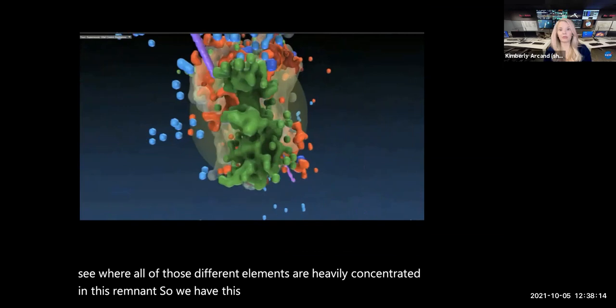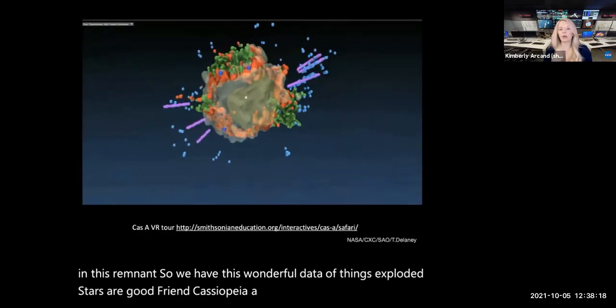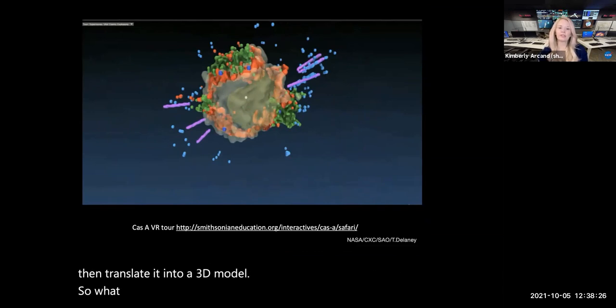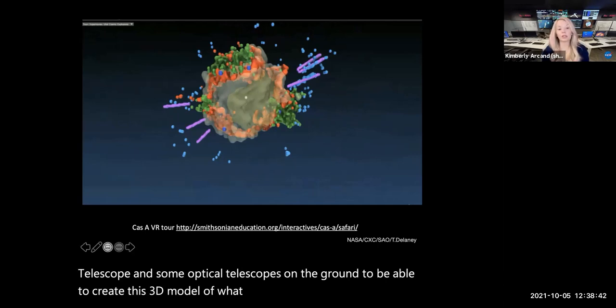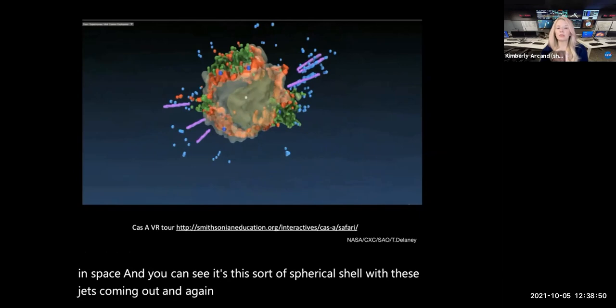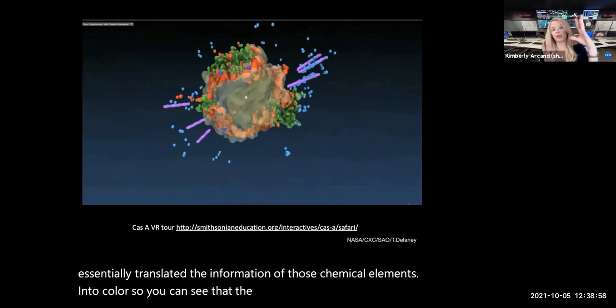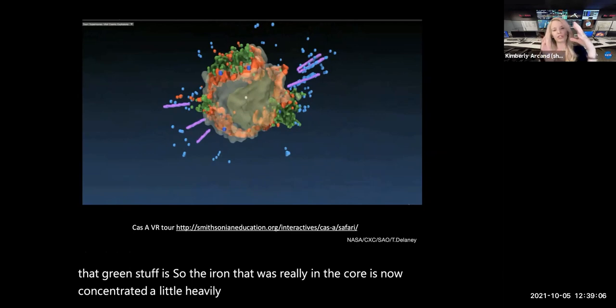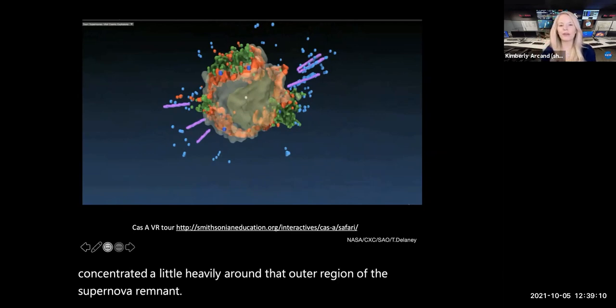So you can see where all of those different elements are heavily concentrated in this remnant. So we have this wonderful data of things like exploded stars, our good friend Cassiopeia A. And by using more software and more coding and more scientific analysis, we can then translate it into a 3D model. So what you're looking at here is the first ever data-driven 3D model. So using all of that information that was captured by the spacecraft and a couple of our friends as well, the Spitzer Space Telescope and some optical telescopes on the ground, to be able to create this 3D model of what that object might actually look like in space. And you can see it's this sort of spherical shell with these jets coming out. And again, the color is important because we've essentially translated the information of those chemical elements into color. So you can see that the iron, for example, is where all of that green stuff is. So the iron that was really in the core is now concentrated a little heavily around that outer region of the supernova remnant.